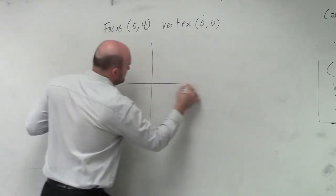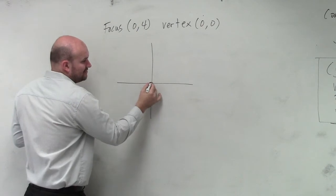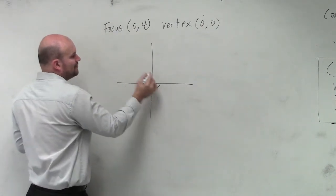So in this example, we have our vertex is at (0, 0). Label it. Focus is at (0, 4).